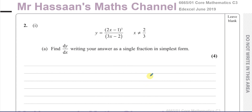The first question gives you a function y equals (2x − 1)³ over (3x − 2), and of course x cannot be two thirds, otherwise it'd be undefined. We have to find dy/dx, writing the answer as a single fraction in simplest form.